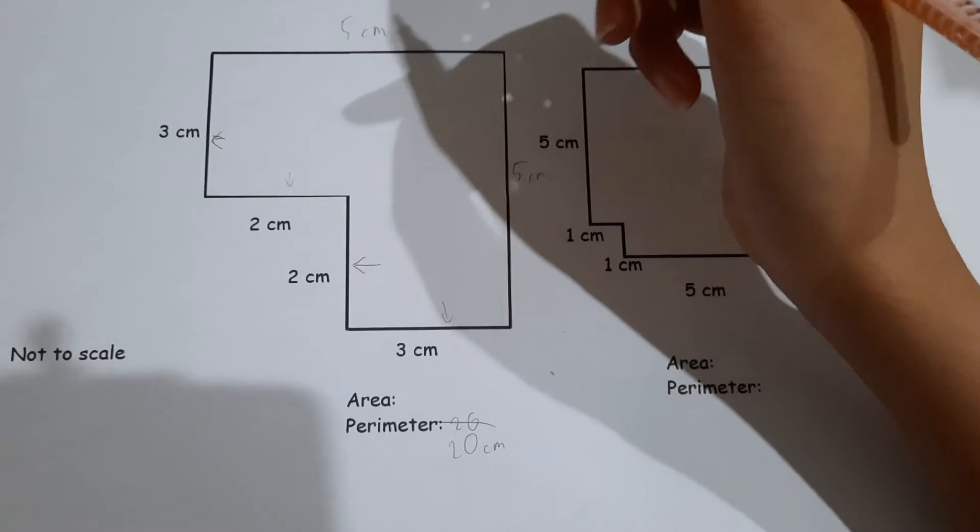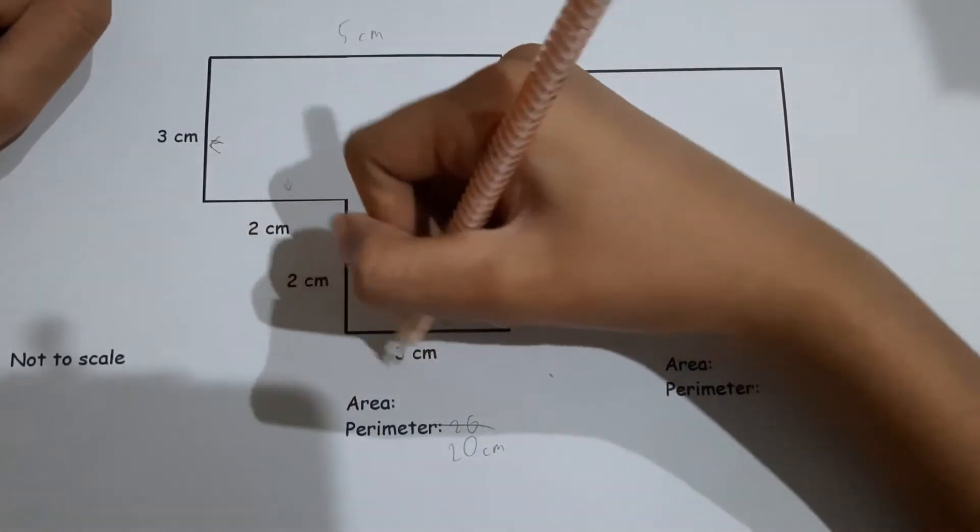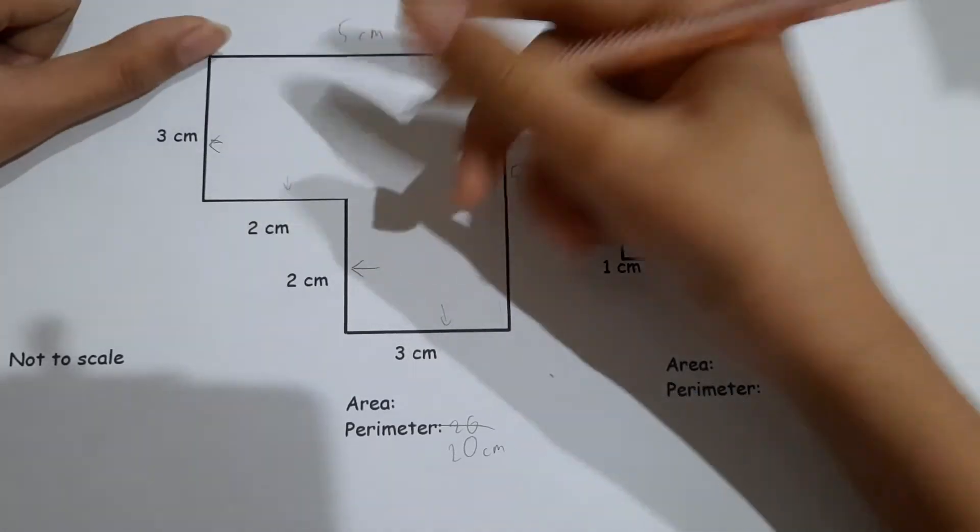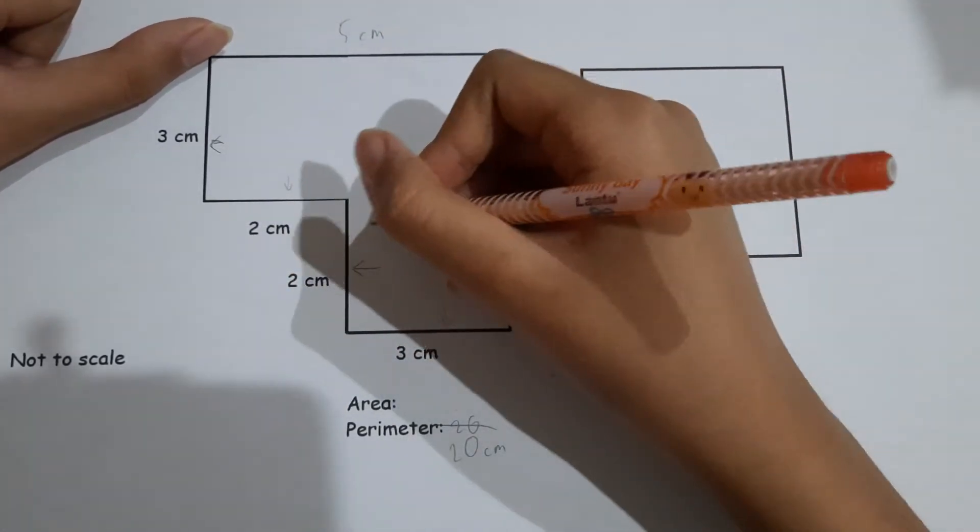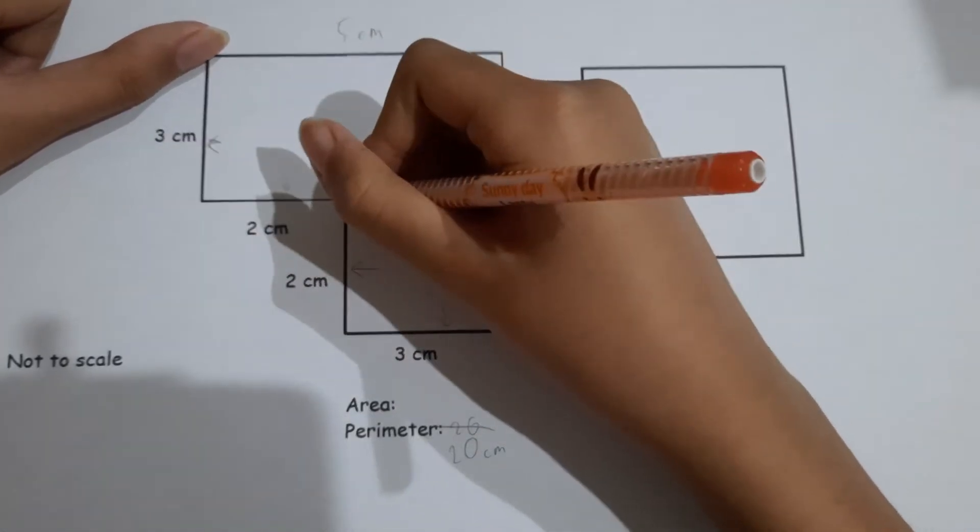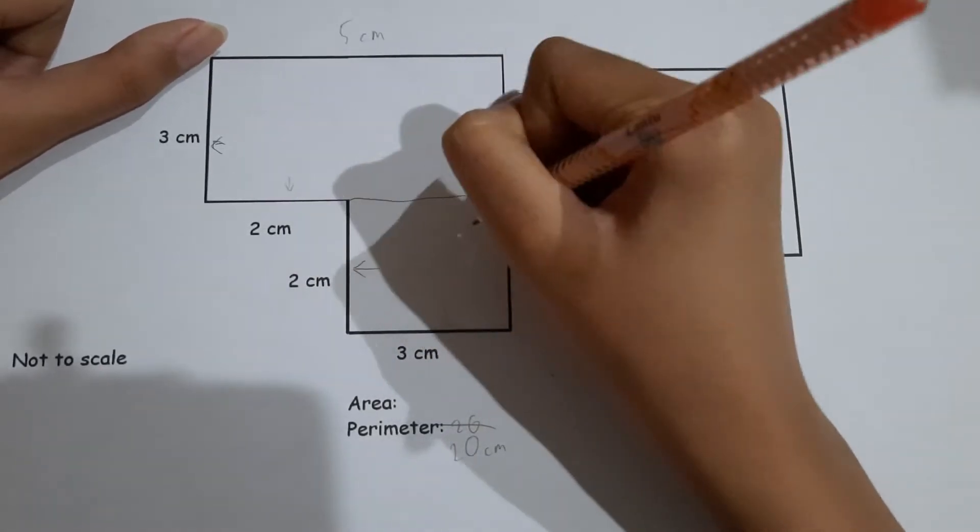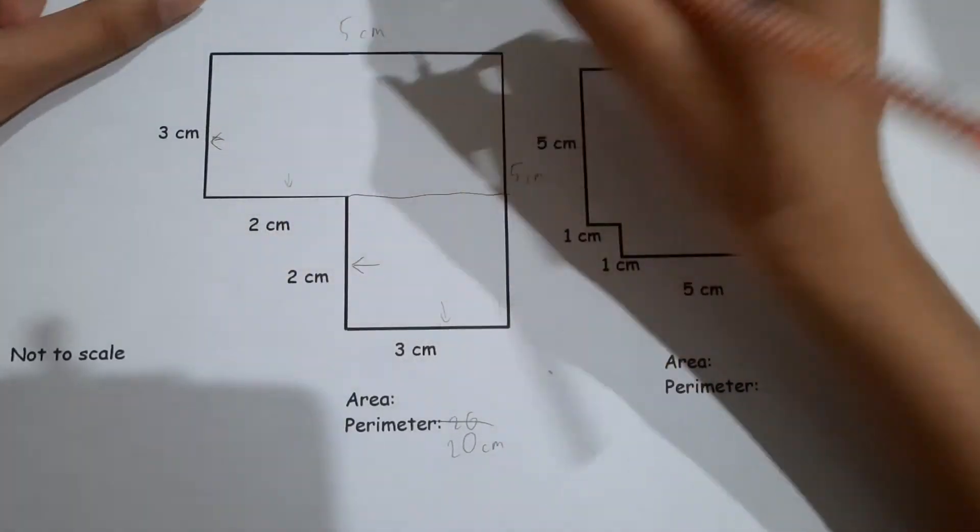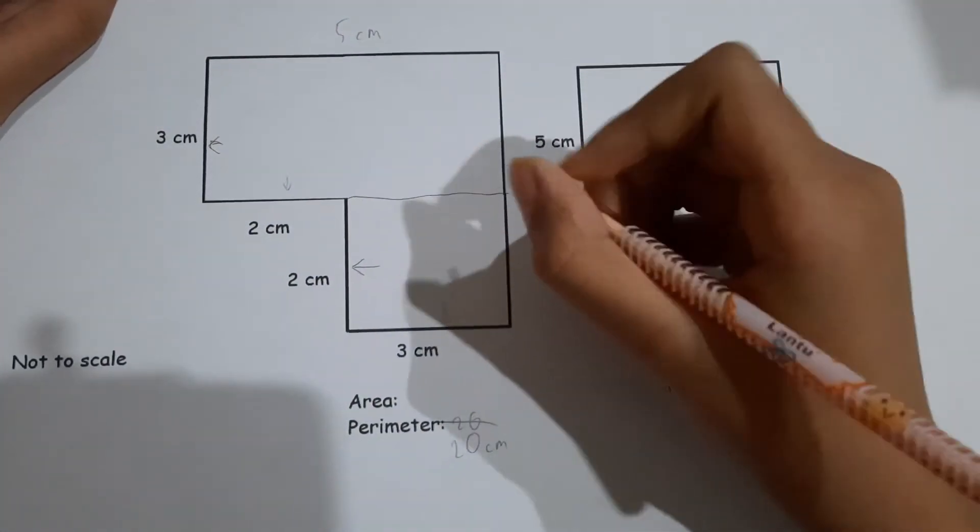How about the area? You need to multiply these two, and then it will be six. Cut that off. Now it will be three times five, sixteen, six plus fifteen - twenty one.